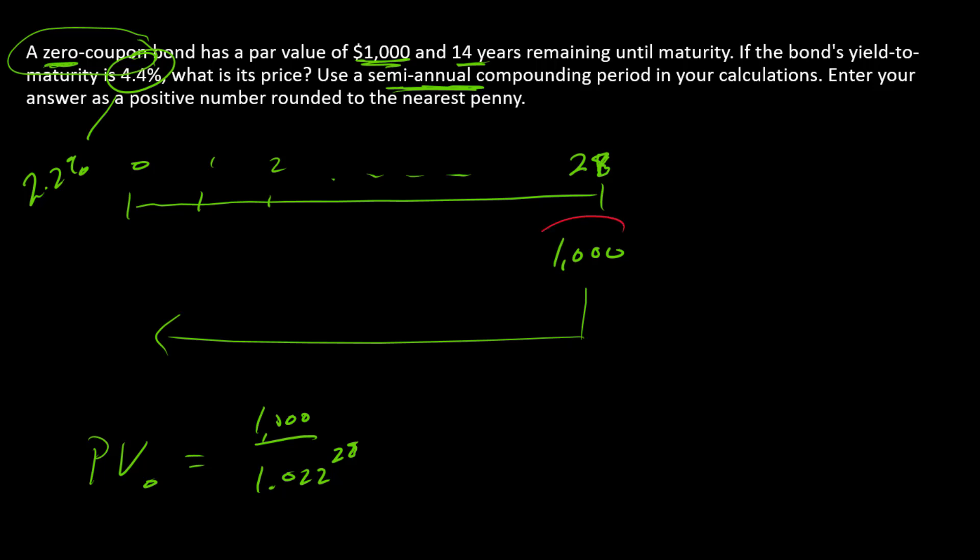Or you can use a financial calculator with 1,000 as FV because that's the final payment. N is 28. Payment, since it's a zero, payment is zero. And I is going to be this number here. FV is going to be positive. PV is going to be negative.